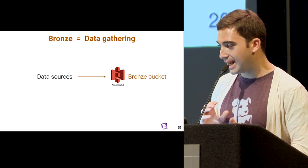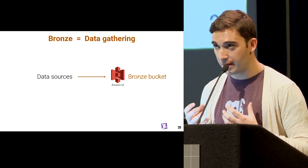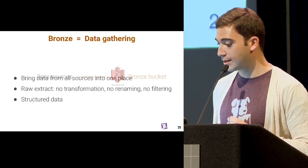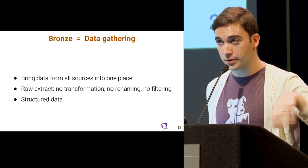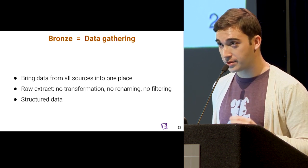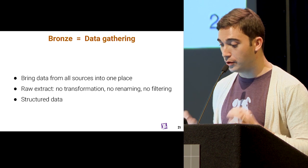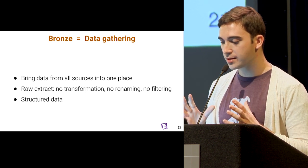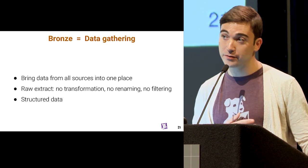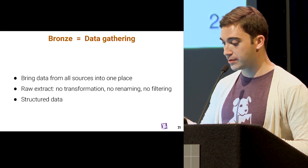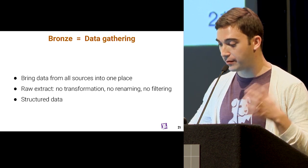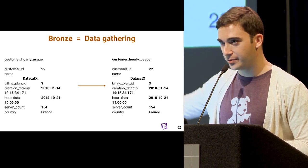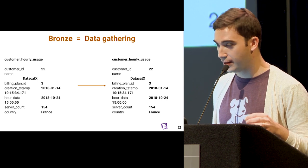What happens here is that we preserve the data at various points in the pipeline, and that allows us to tackle the different challenges. Bronze: we simply extract from the data source and put the data in a landing zone that we control and own. We extract from all the different tools and systems into one place. It's a raw extract — no transformation, no renaming, no filtering. The data ends up in bronze in a structured tabular format. We extract once, and then we don't care what happens in the source because we have the data. A concrete example: if you have this in your data source, in bronze, no transformation — it's exactly the same in the bronze S3 bucket.